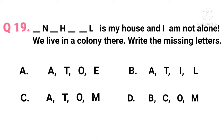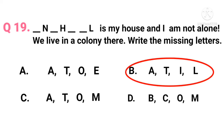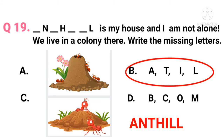Question 19. Dash N dash H dash dash L is my house, and I am not alone there — we live in a colony there. Write the missing letters. The answer is option B — A, T, I, L. The word is anthill. Ants live in an anthill and have different types of ants together in a colony: workers, queen, and males. Together they form an ant colony.